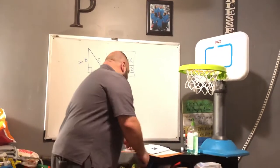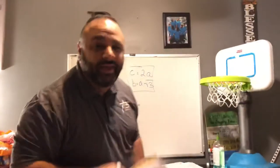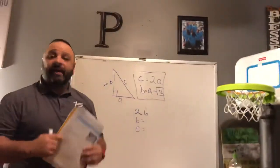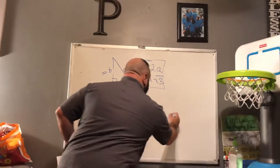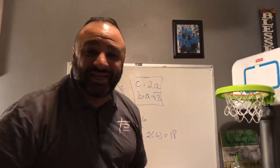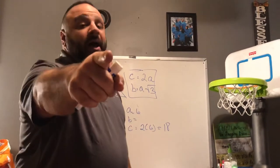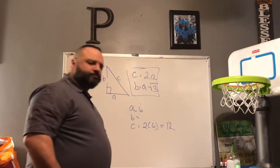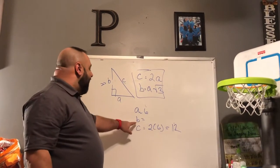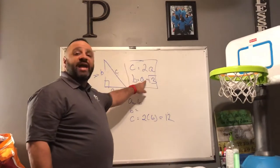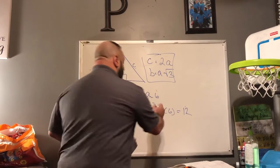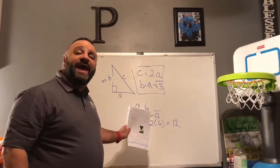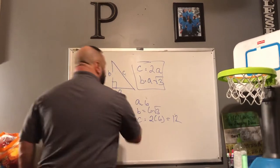Back to the 30-60 right triangle. How do I find the length of the hypotenuse? It's two times the shortest side. So with A equals 6, the hypotenuse is two times six, which equals 12. And how do I find side B? It's simply the shortest side times the square root of three: 6√3. Now let's verify using the Pythagorean theorem: 12 squared should equal 6 squared plus (6√3) squared.